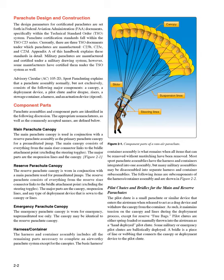Emergency Parachute Canopy. The emergency parachute canopy is worn for emergency, unpremeditated use only. The canopy may be identical to the reserve parachute canopy. Harness and Container Assembly. The harness and container assembly includes all the remaining parts necessary to complete an airworthy parachute system except for the canopies. The basic harness/container assembly is what remains when all items that can be removed without unstitching have been removed. Most sport parachute assemblies have the harness and containers integrated into one assembly, but many military assemblies may be disassembled into separate harness and container sub-assemblies.